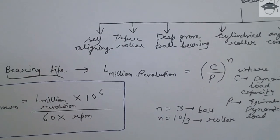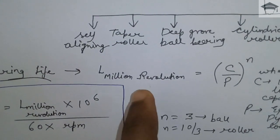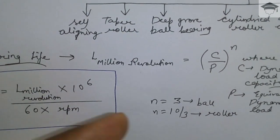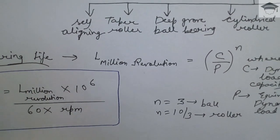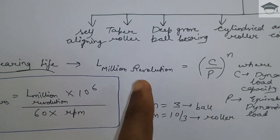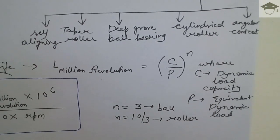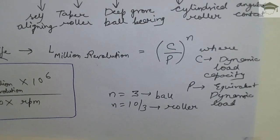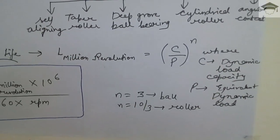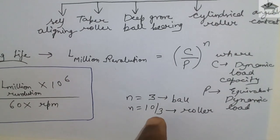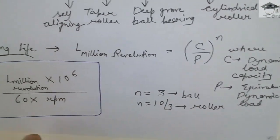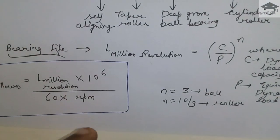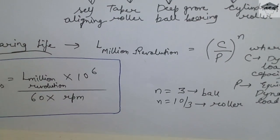Bearing life means for how much time the bearing can work successfully without failure. It is measured in millions of revolutions — because the shaft rotates, the bearing also rotates — and how many million times the bearing has rotated before it fails is known as bearing life. Bearing life in million revolutions is equal to (C/P)^n, where C is the dynamic load capacity, P is the equivalent dynamic load acting on the bearing, n = 3 for ball bearing, and n = 10/3 for roller bearing. Life in hours = (10^6) / (60 × RPM).